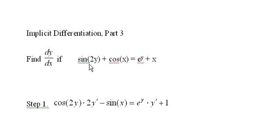We look at sine of 2y and using the chain rule we know that the derivative of the sine of 2y is the cosine of 2y times 2 times y prime.